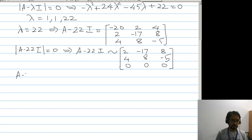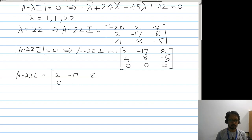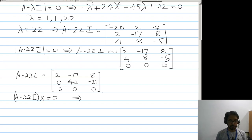The echelon form of A minus 22I is equal to: 2, minus 17, 8, then 0, 42, minus 21, and 0, 0, 0. So A minus 22I times x equal to 0.